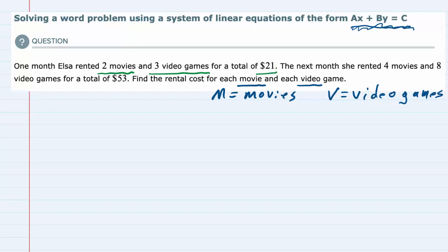From that first sentence, two movies, so that would be two times the cost of each movie, which is M, plus three video games, so three times the price of each video game, equals the total that she spent that month, $21. So that is our first equation.